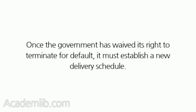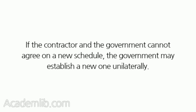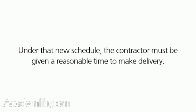Once the government has waived its right to terminate for default, it must establish a new delivery schedule. If the contractor and the government cannot agree on a new schedule, the government may establish a new one unilaterally. Under that new schedule, the contractor must be given a reasonable time to make delivery.